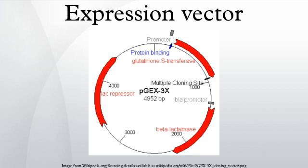E. coli cell lysate containing the cellular components required for transcription and translation are used in this in vitro method of protein expression. The advantage of such a system is that protein may be produced much faster than those produced in vivo since it does not require time to culture the cells, but it is also more expensive. Vectors used for E. coli expression can be used in this system although specifically designed vectors for this system are also available. Eukaryotic cell extracts may also be used in other cell-free systems, for example the wheat germ cell-free expression system.